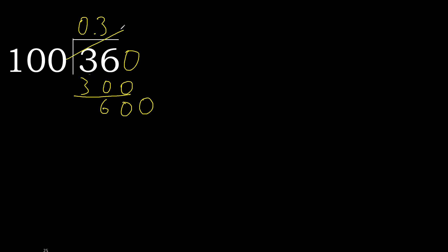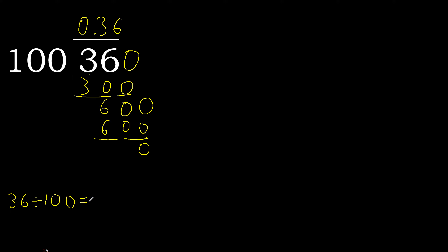600 — 100 multiplied by 6 is 600, is not greater. Subtract 0. Therefore, finish it. 36 divided by 100 equals 0.36.